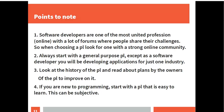One: software developers are one of the most united professions online, with a lot of forums where people share their challenges — so when choosing a PL, look for one with a strong online community. Two: always start with a general purpose PL, except if as a software developer you will be developing applications for just one industry — for example, R is mainly used by statisticians. Three: look at the history of the PL and reliable plans by the owners. Even if the programming language is open source, you should look at the history of the programming language, where the language is today, and whatever projections you read online about the language.